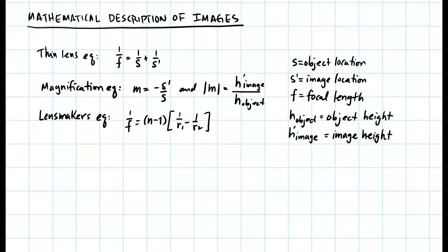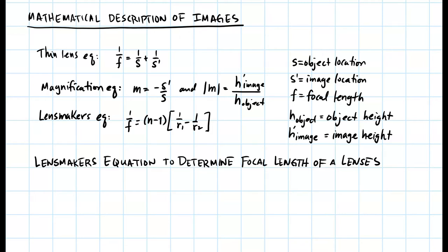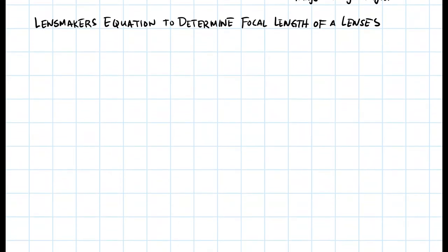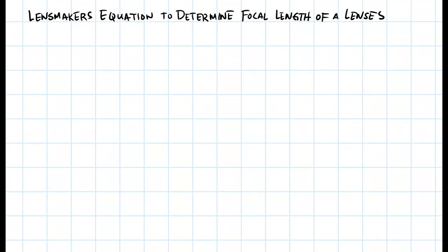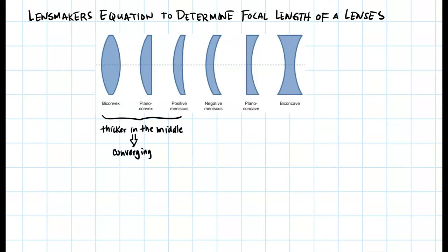We will first use the lens maker equation to determine the focal length of a lens. Converging and diverging lenses come in a variety of shapes. One can usually tell the difference by the thickness in the middle of the lens. If the lens is thicker in the middle than the outer edges, it is converging. If it is thinner in the middle compared to the outer edges, it is diverging. The first three lenses, being thicker in the middle, must be converging. The last two are thinner in the middle, therefore they are diverging.